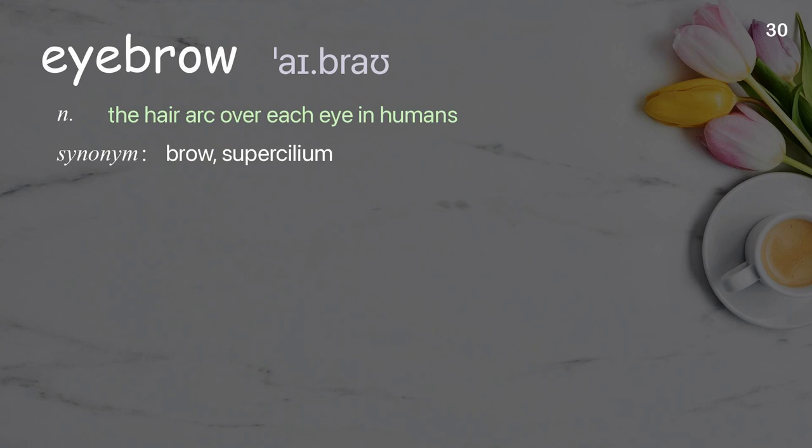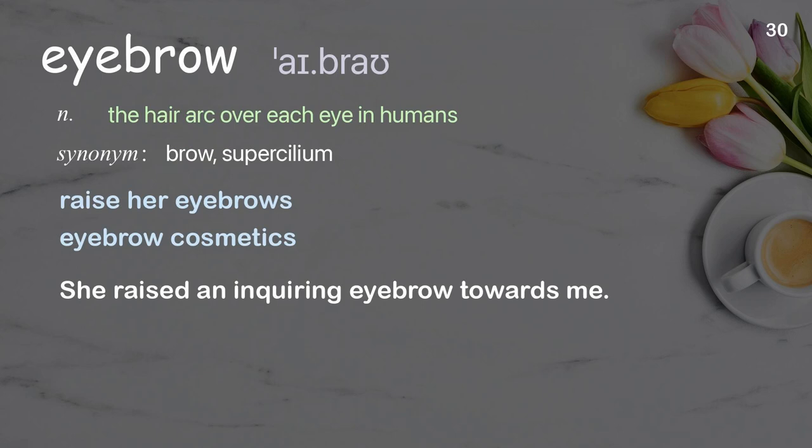Eyebrow: the hair arc over each eye in humans. Examples: raise her eyebrows, eyebrow cosmetics. She raised an inquiring eyebrow towards me.